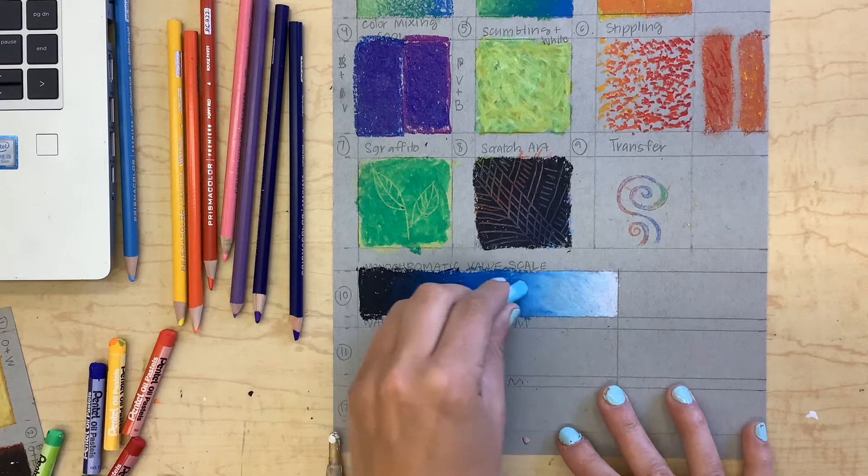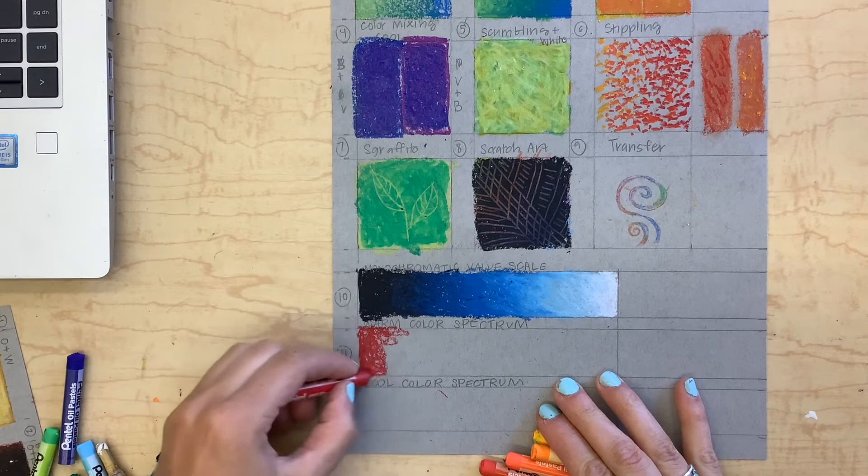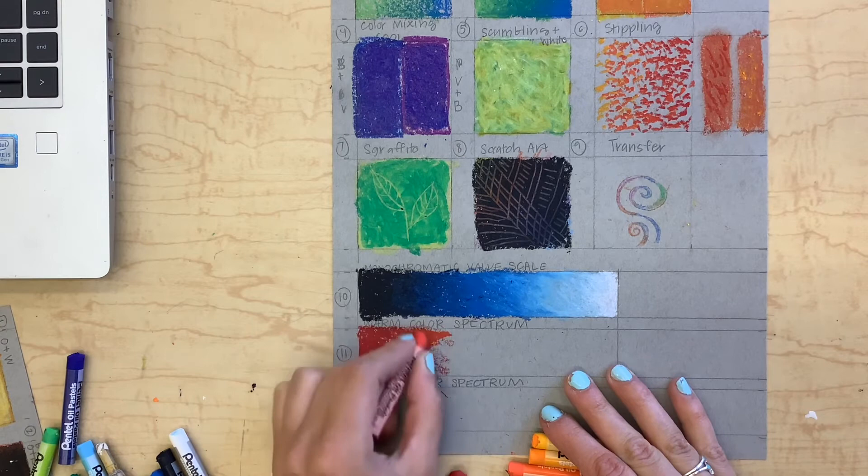Moving on to the warm color spectrum, I'm going to start with the darkest color which is going to be this darker red and then work all the way over to yellow, just from left to right. I'll be using the same technique of lightening the pressure and then overlapping those colors and then adding some finishing touches at the end to really blend things together.